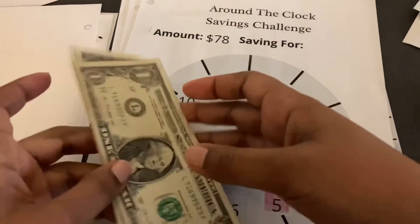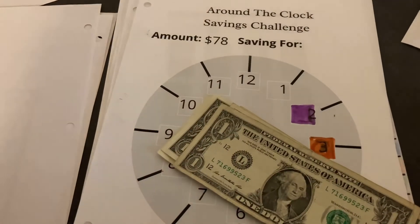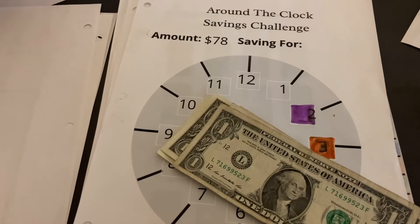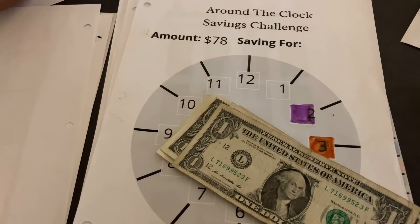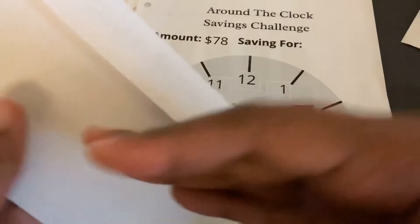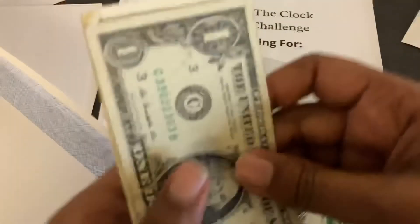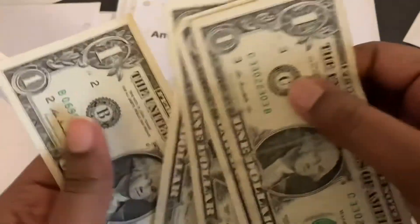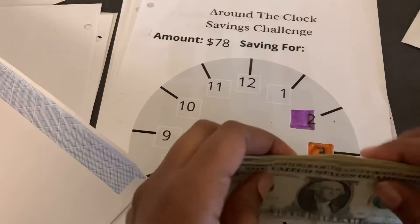Okay, so I do have an envelope. Let me see. Okay, so the Around the Clock Savings Challenge here. So I already have $1, $2, $3, $4, $5 in there, so I'll put there $5, and that makes a total of $10. Okay, so that completes the savings challenge.